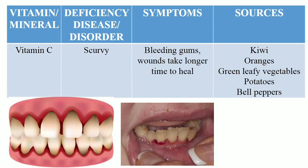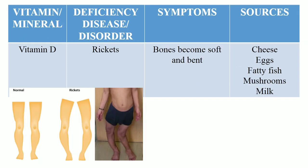Deficiency of vitamin D causes poor absorption of calcium, so the bones become soft and weak. The disease is called rickets. The person should intake food which is rich in vitamin D. Cheese, eggs, fatty fish, mushrooms and milk are some good sources of vitamin D.